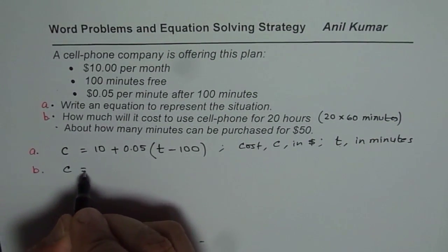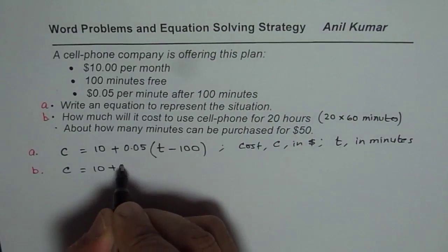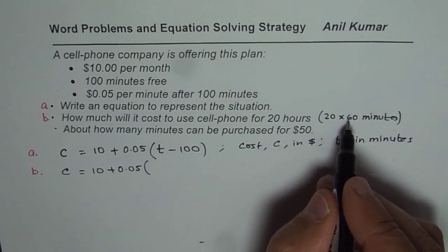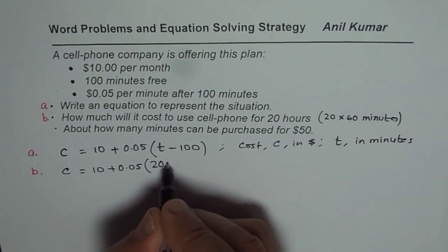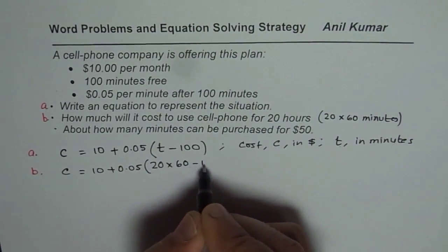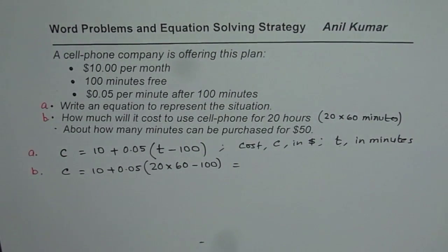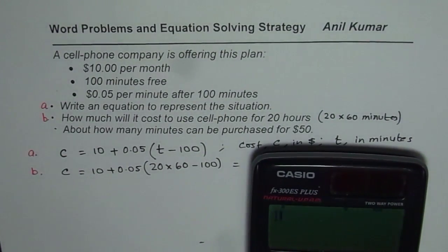We can use this equation and say C equals to 10 plus 0.05, so I will write time as 20 times 60, we will use calculator, minus 100. And that is equal to, let us calculate. So 10 plus 0.05 within brackets 20 times 60 minus 100, bracket close, equal to 65.